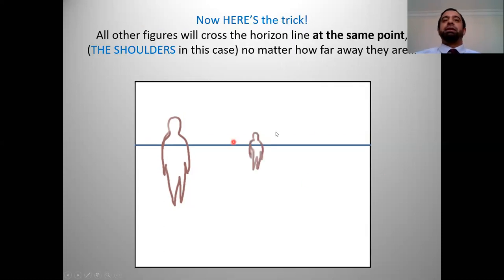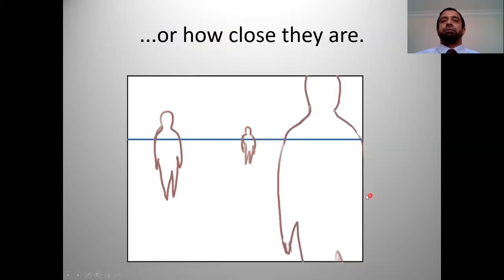The reason why that's important is because any figure that you put on there, the horizon line will need to go through the same area. So if it's on the shoulders or just below, you need to ensure that the same section is on the person further back or forward. And all other figures will cross the horizon line at some point, the shoulders in this case, no matter how far away they are or how close. So here you can see it cuts through the shoulders. The person is further back, another person is further back, and it cuts to the shoulders. This person is forward, closer to your screen, and it cuts through the shoulders again.